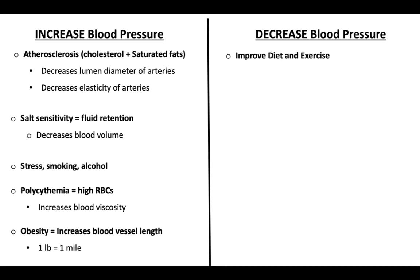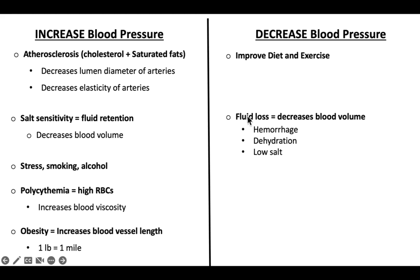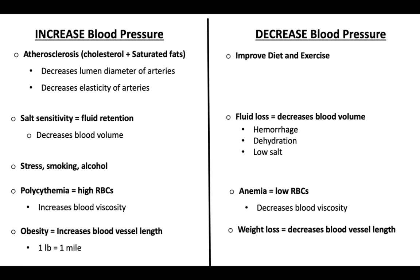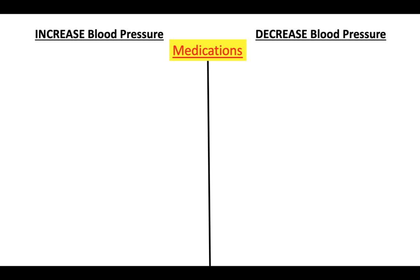Things that might decrease blood pressure include improving diet and exercise, losing fluid through bleeding or dehydration, having a low-salt diet, and anemia — which makes blood less viscous and can cause hypotension. Losing weight also decreases blood vessel length, reducing resistance and pressure.